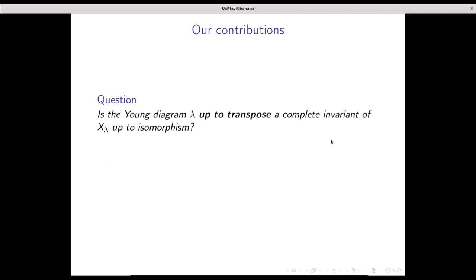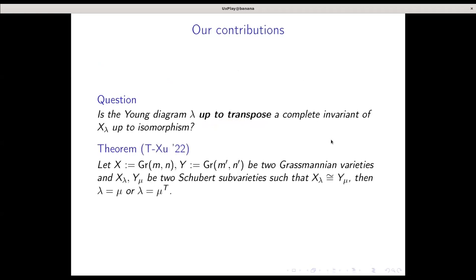So with this, I update my question to: is the Young diagram lambda up to transpose a complete invariant of X_lambda up to isomorphism? And we answer this question in the positive. If X and Y are Grassmannians, could be different, arbitrary, and X_lambda and Y_mu are Schubert subvarieties which happen to be isomorphic, then lambda equals mu or lambda is mu transpose.